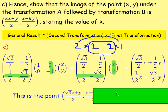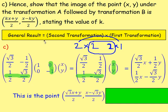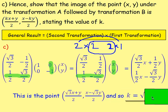Taking out 1/2 as a common factor, the image is ((√3 x + y)/2, (x − √3 y)/2). Comparing with (kx + y)/2 and (x − ky)/2, we can see that k = √3.